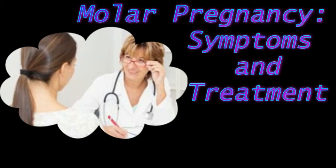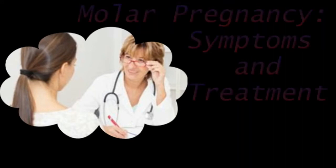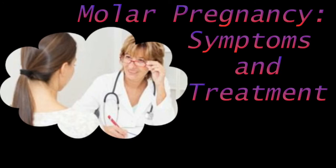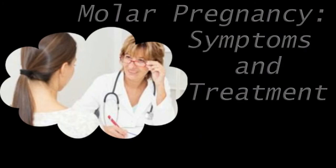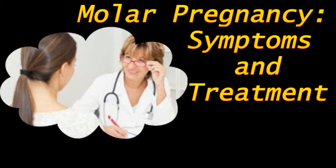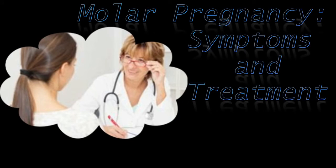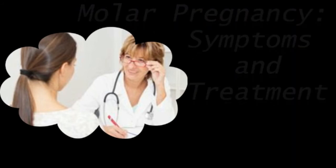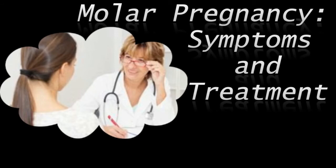The partial pregnancy happens when an egg is fertilized by two sperms. Instead of forming twins, an abnormal fetus and placenta develop, in which the baby has numerous chromosomes and usually dies in the uterus. The potential causes for this kind of pregnancy can be defects in the egg, abnormalities within the uterus, or a diet low in proteins, vitamin A, and fat.